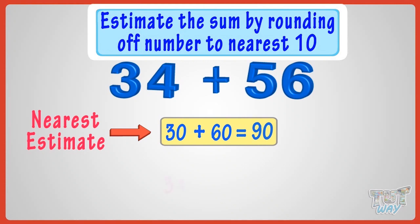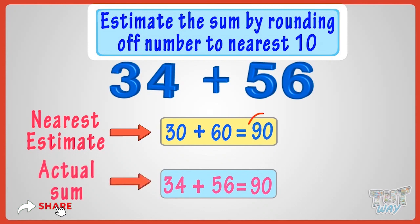Now, 34 plus 56 gives us 90. Oh, wow! Here, the estimate and actual sum are the same. Good!